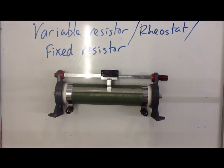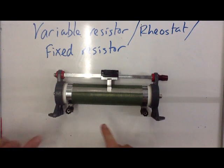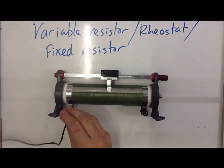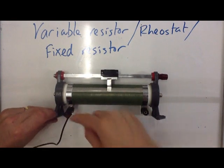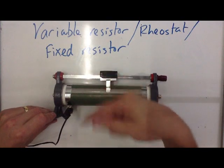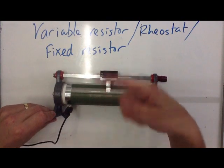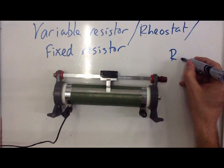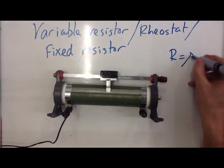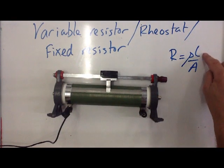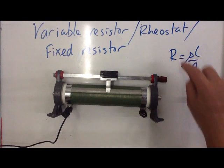In variable resistor form, we can put the current into one of these terminals here. So let's say it goes into this one, and that current will go through these tiny little wires — it has to go round and round the wires. We know that resistance is equal to resistivity times length divided by cross-sectional area, so if length goes up, resistance goes up.